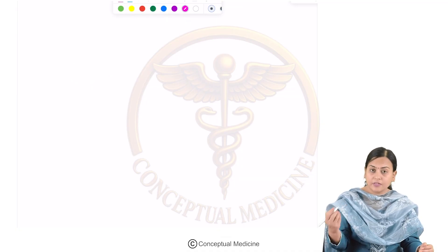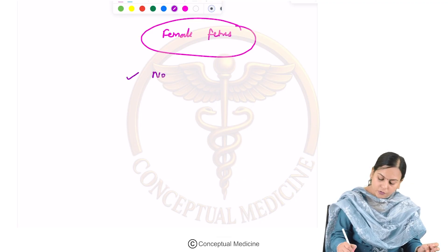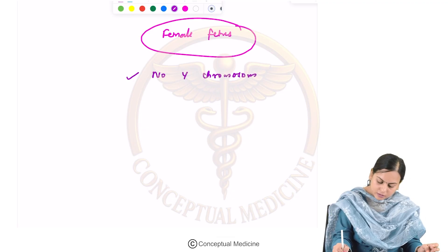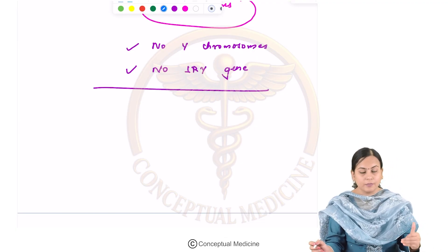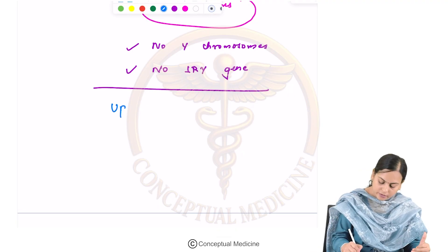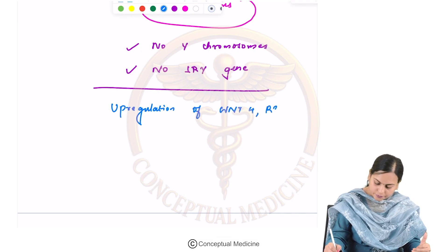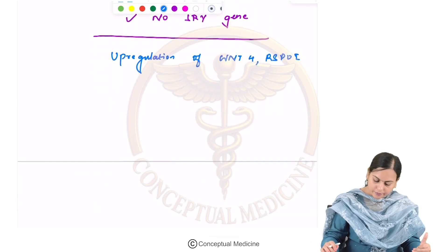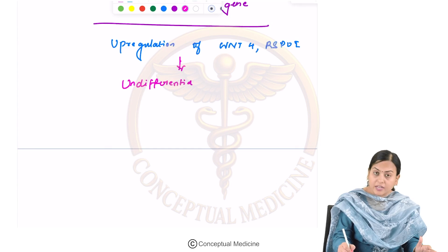In the female fetus, there are no Y chromosomes and no SRY gene. There is upregulation of genes, but different ones — WNT4 and RSPO1 are upregulated. These two genes result in differentiation of the undifferentiated gonad into the ovary, happening between 8 to 10 weeks.